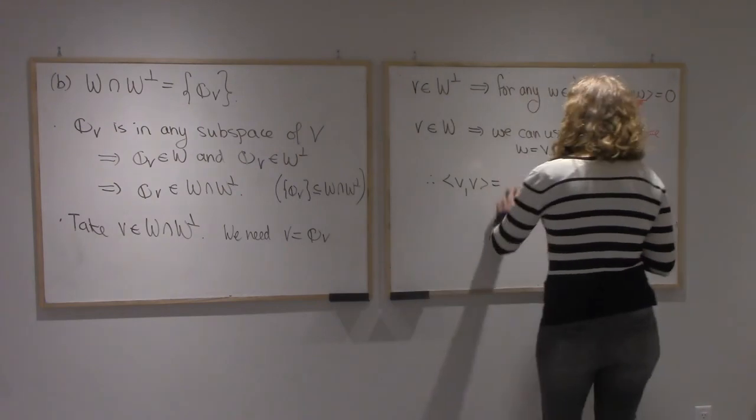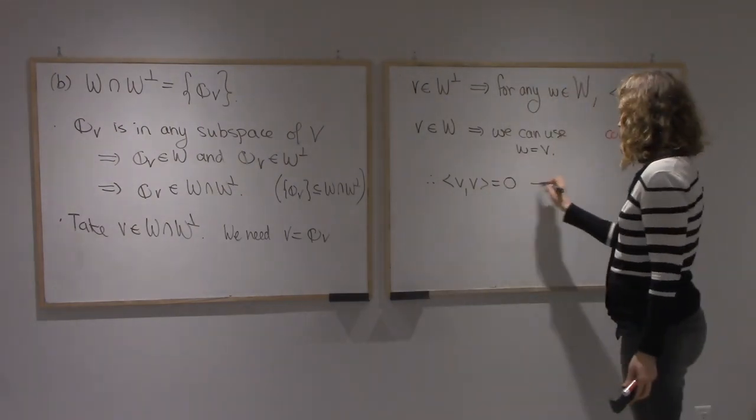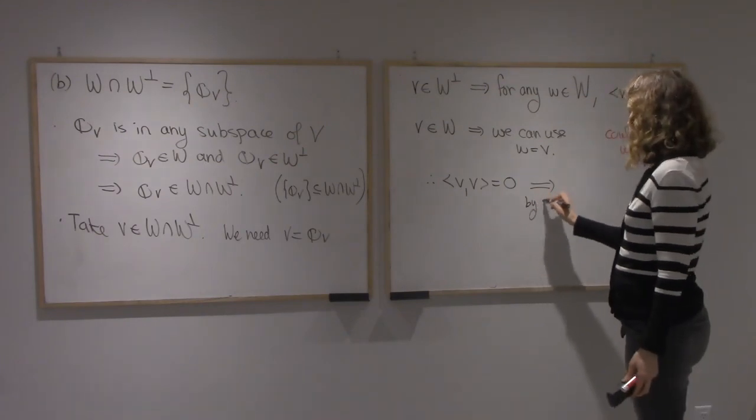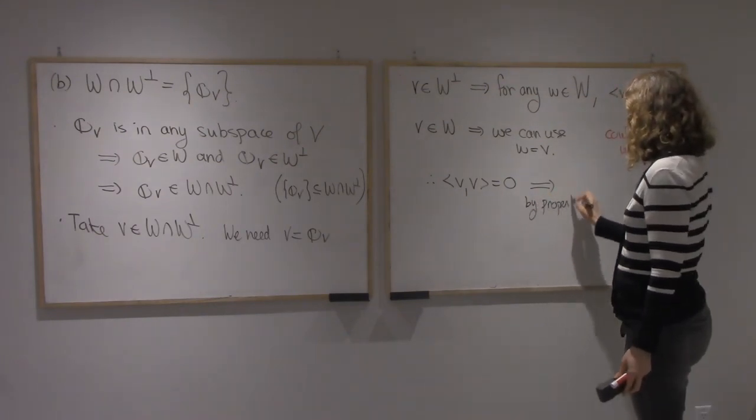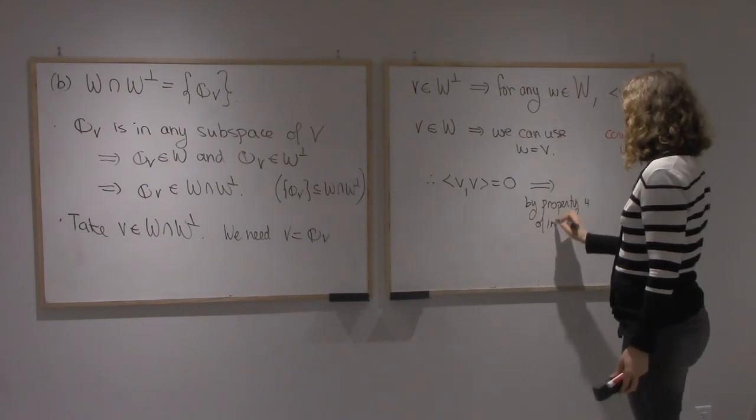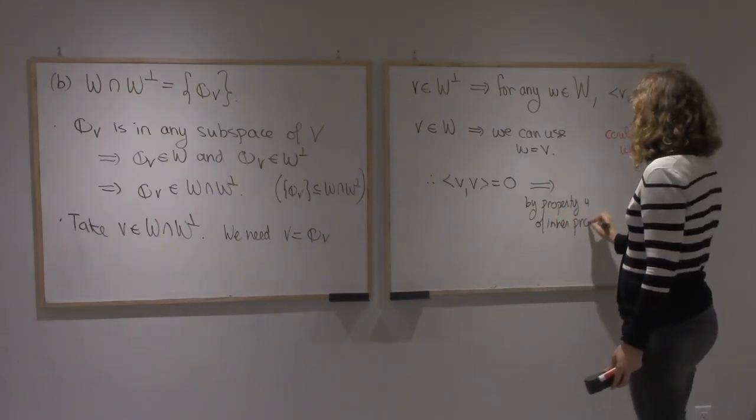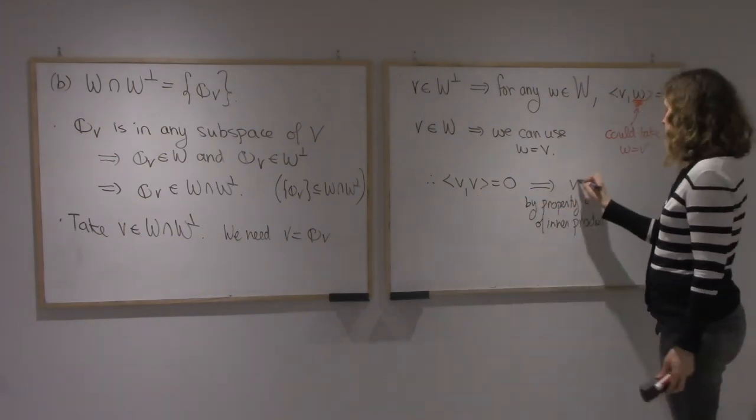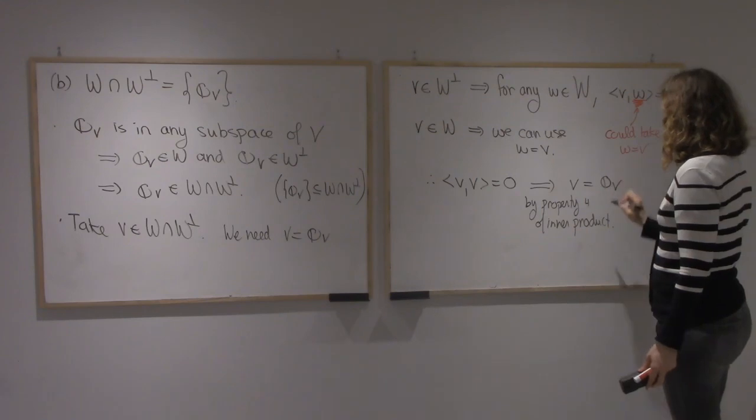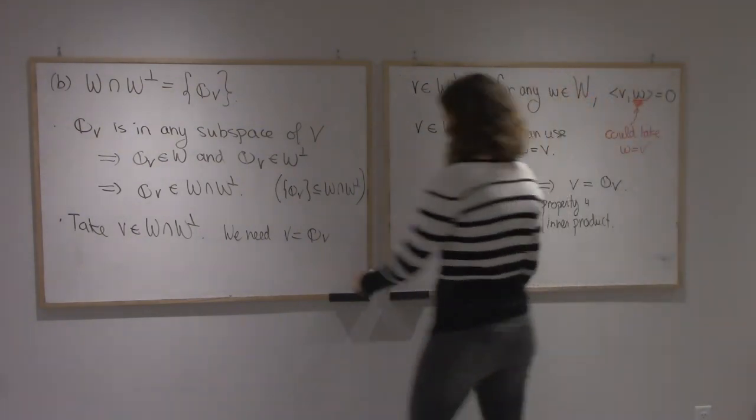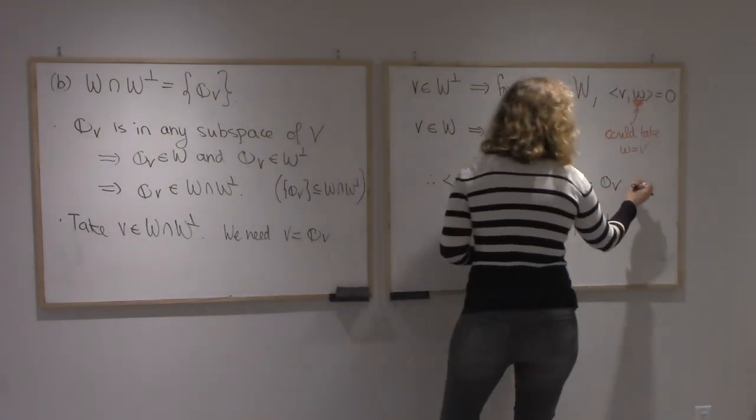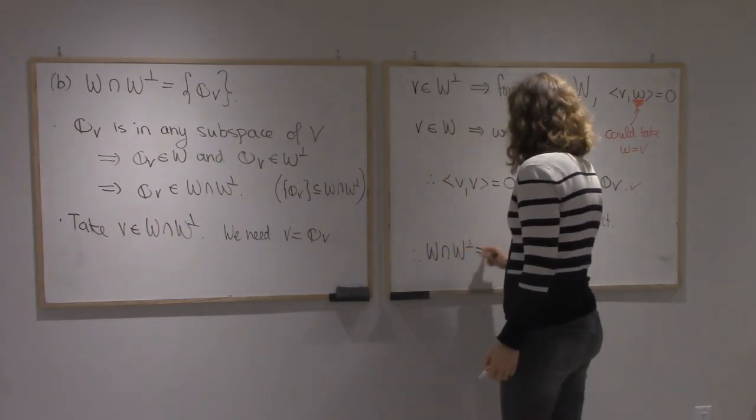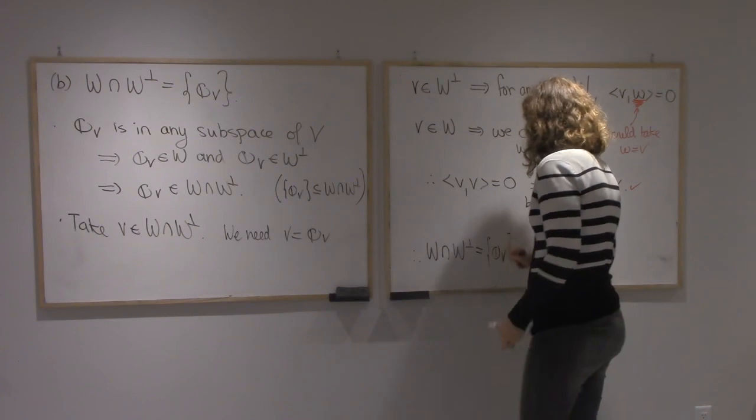v dot v is 0. And by the fourth property of inner product, the only way a vector dot itself is 0 is if the vector is the 0 element of the vector space. And so yes, W-intersection W-perp is just the 0 vector.